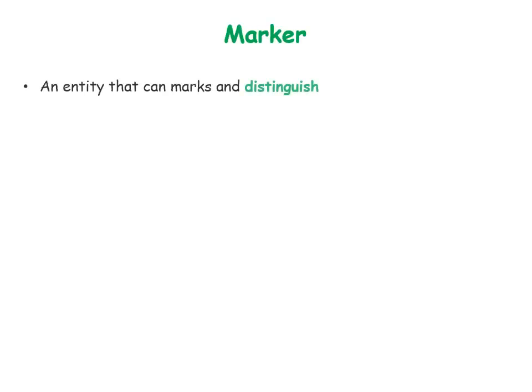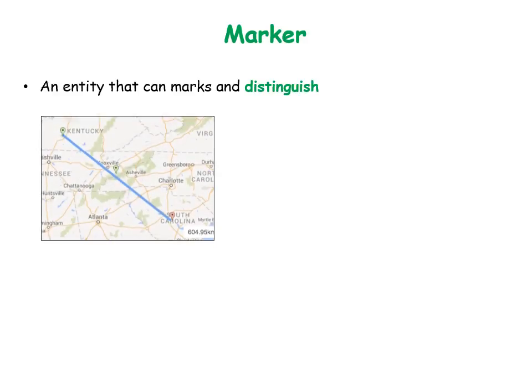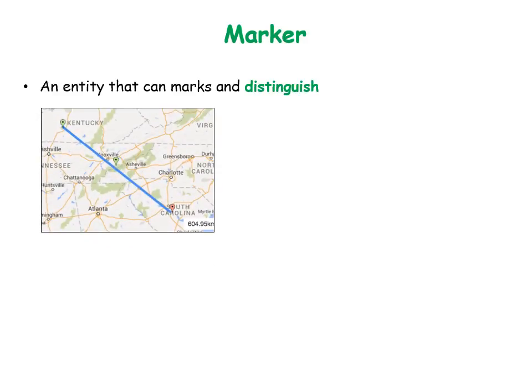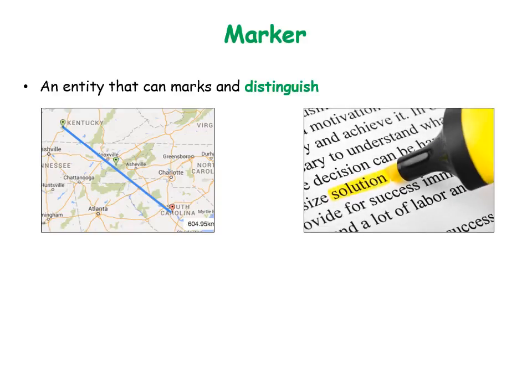A marker is an entity that marks and distinguishes one thing from all others. Consider two places on the map which are marked by green and red marker points. Similarly, in text the marked region highlighted in yellow makes it stand out from the rest of the text. Thus it is also a marker.